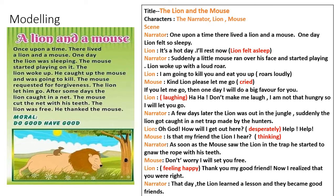Here you can find a story and the play script. 'A Lion and a Mouse.' Once upon a time, there lived a lion and a mouse. One day, the lion was sleeping. The mouse started playing on it. The lion woke up. He caught the mouse and was going to kill him. The mouse requested forgiveness. The lion let him go. After some days, the lion was caught in a net. The mouse cut the net with his teeth. The lion was free. He thanked the mouse. Moral: do good, have good. From this story, we are now creating the play script.